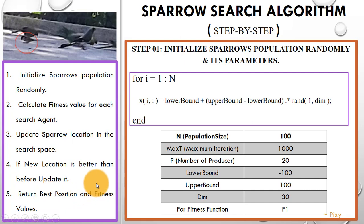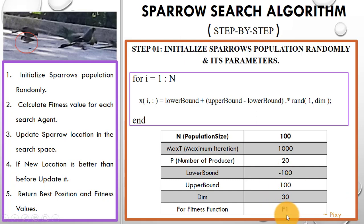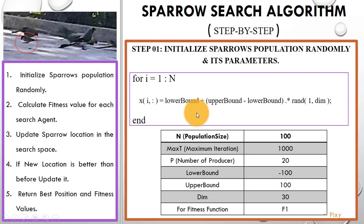Now using these parameters we can generate the population randomly. Here I am using the fitness function f1 — you can check it in the research paper. For fitness function f1, we have lower bound minus 100, upper bound 100, dimension 30, and N is 100, which is the population size.